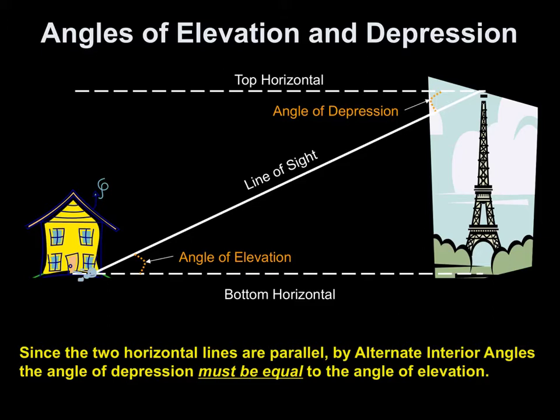Well, if I'm that ant, and I'm looking up, my eye will make an angle with the ground. And the ground in this picture is given by the bottom horizontal. So I'm making an angle, maybe it's like 40 degrees that I'm looking up to see the top of the Eiffel Tower. That's my angle of elevation, because I'm looking up.